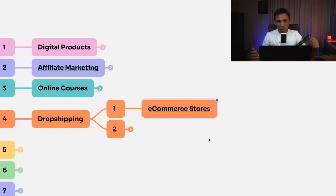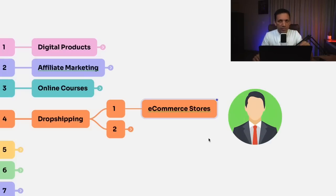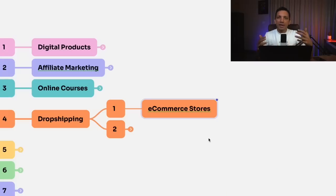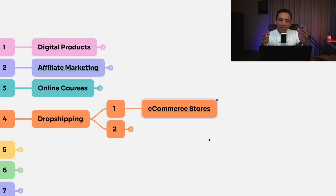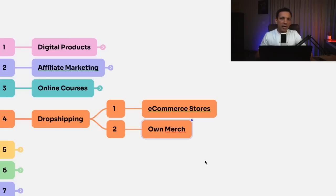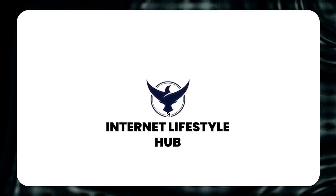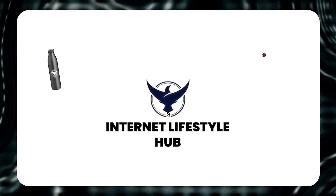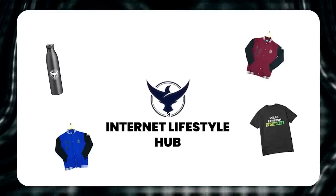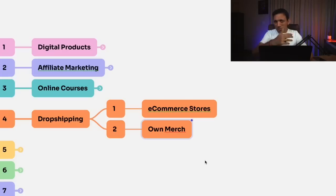You could have another niche e-commerce store targeting only entrepreneurs, or teenagers with an online gaming store. So having niche e-commerce stores is the first way to create passive income here. The second is selling your own merchandise. I built a brand called Internet Lifestyle Hub, and if you search for ILH shop, we have our own merchandise. I create passive income selling even physical products, where the margins are not as high as digital products, but I still generate passive income. Idea number four is to go into dropshipping and e-commerce.